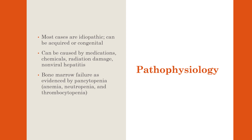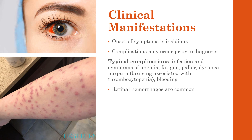With aplastic anemia, the cause is often idiopathic. The most common cause is the immune system's T lymphocytes attacking stem cells in the bone marrow. Other factors that can injure the bone marrow include radiation and chemotherapy agents — which we'll discuss again when we talk about cancer.